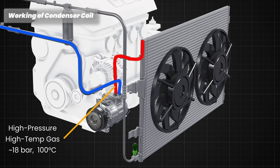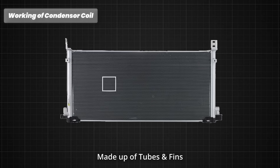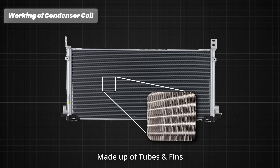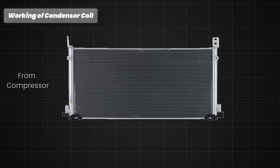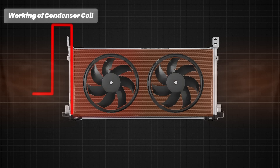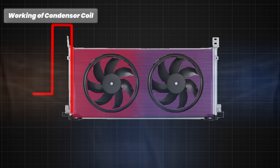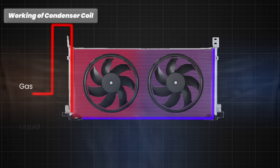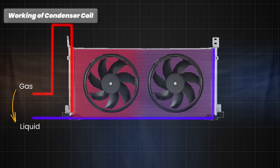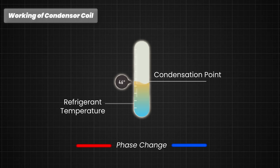This hot gas flows into the inlet of the condenser, which is usually located at the front of the vehicle near the radiator to take advantage of airflow when the car is moving. The condenser is made up of a series of tubes and fins that provide a large surface area for heat exchange. As the hot refrigerant gas flows through the condenser coils, it releases heat to the surrounding air. The condenser fan and vehicle motion ensure sufficient air passes over the condenser to dissipate heat effectively. As the refrigerant loses heat, it begins to change from a high-pressure gas to a high-pressure liquid — this is called a phase change — because the refrigerant's temperature drops below its condensation point.